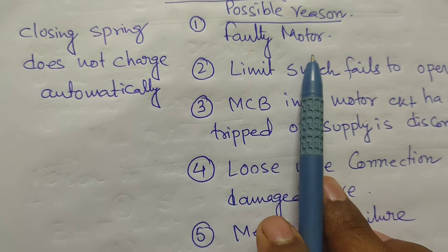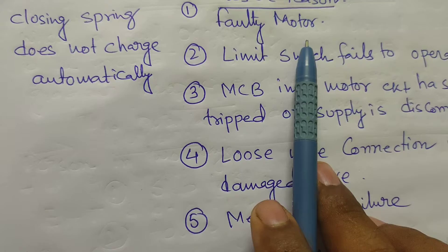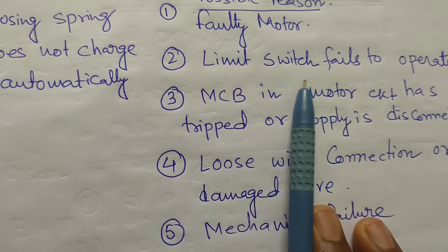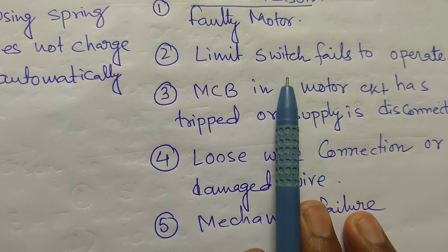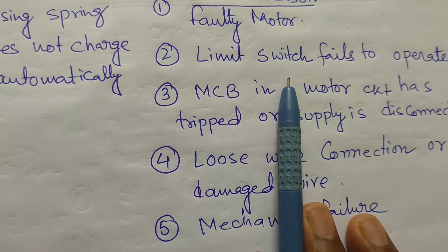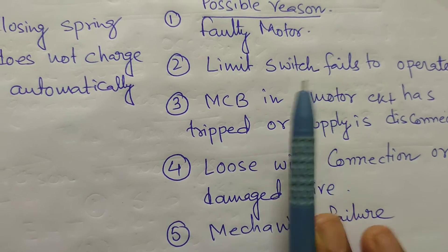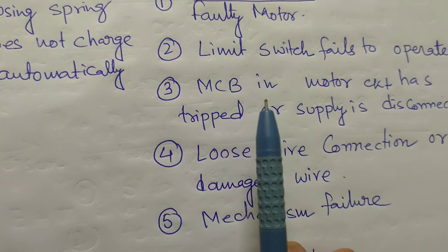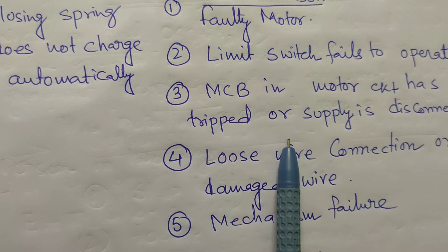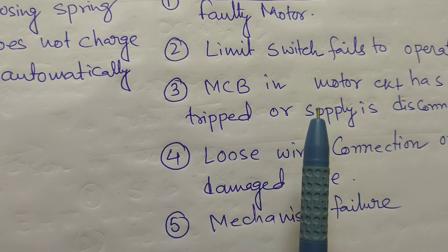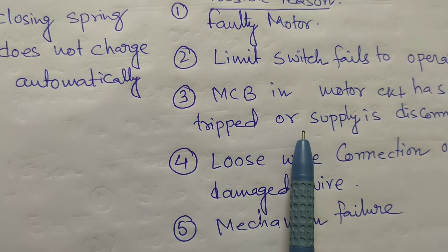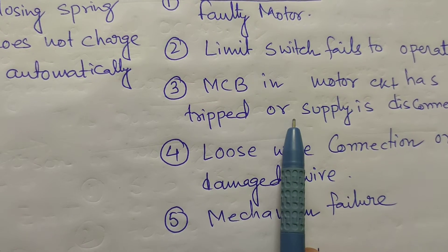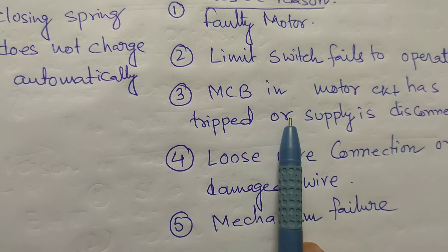Possible reasons for the closing spring not charging automatically: first, a faulty motor — the motor inside the circuit breaker mechanism box may be faulty. Second, limit switch failure — any problem inside the limit switch connected to the mechanical hinge for switching on, switching off, or spring charge. Third, the MCB in the motor circuit has tripped due to a short circuit or other electrical problem.